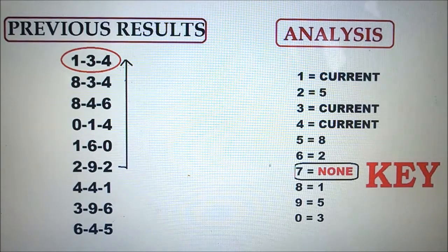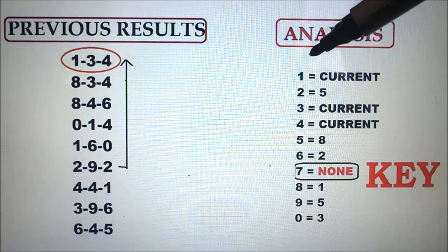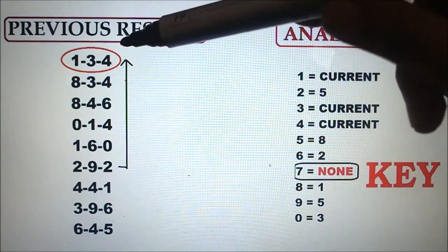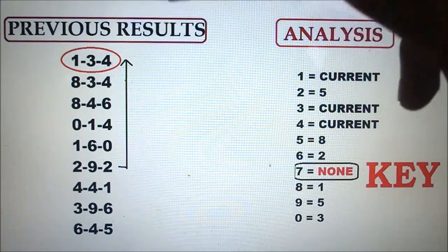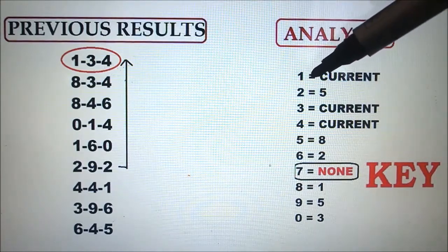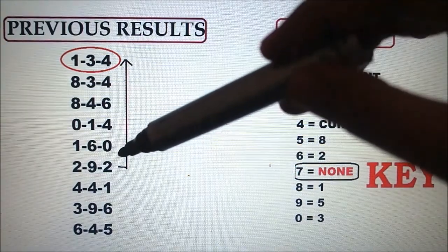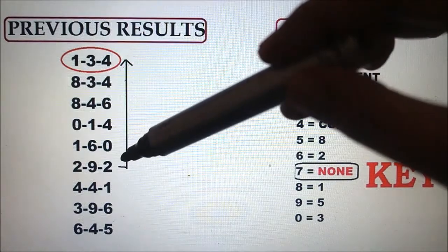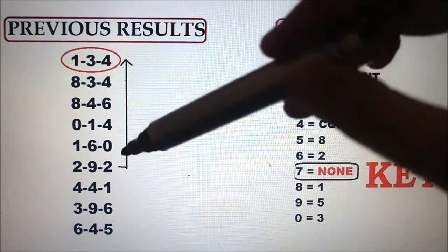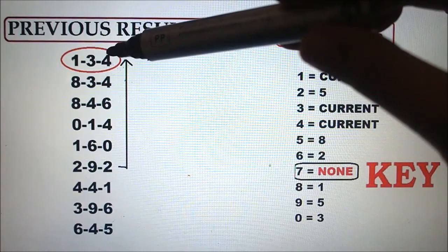Now we will apply the analysis. One, current. Level 1-3-4 as current because they are the current draws. So two, five. As you can see, the number 2 has not been drawn five times in a row, so you will count upward 1, 2, 3, 4, 5 until it hits on the current draw.